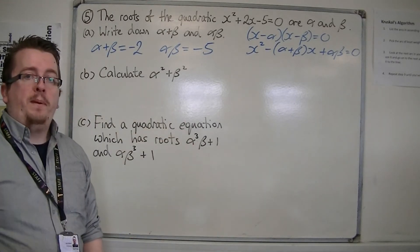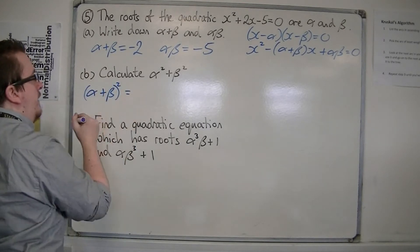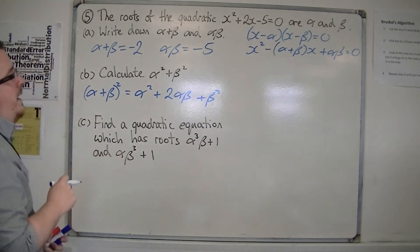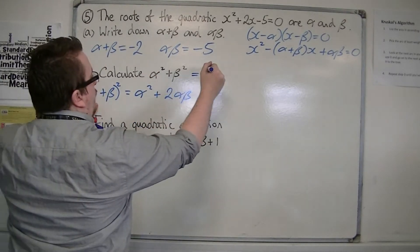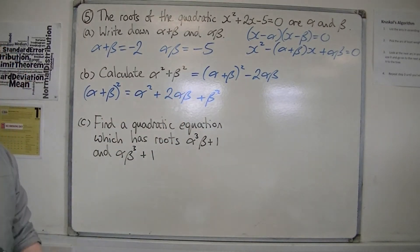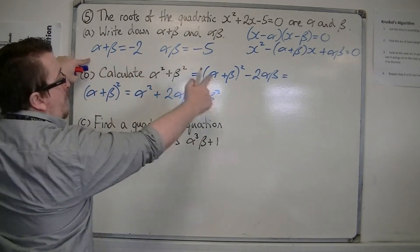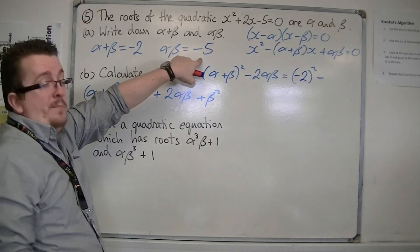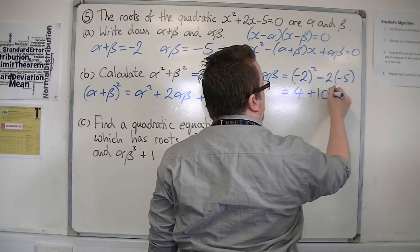Next we need to calculate alpha squared plus beta squared. We get alpha squares and beta squares by expanding alpha plus beta squared, which gives alpha squared plus 2 alpha beta plus beta squared. Rearranging: alpha squared plus beta squared equals (alpha plus beta) squared minus 2 alpha beta. So that's (minus 2) squared minus 2 times minus 5, which is 4 plus 10, giving us 14.